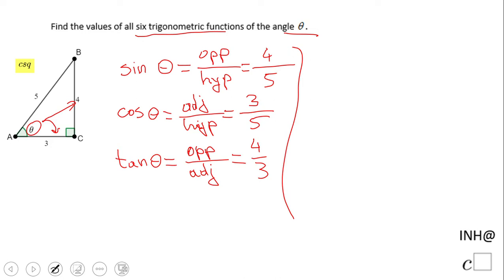The next one is called cosecant. Cosecant is the reciprocal of sine - they go together. If you want to use the definition, it's hypotenuse over opposite side, so in this case it would be 5 over 4.